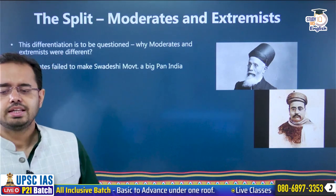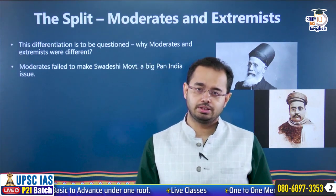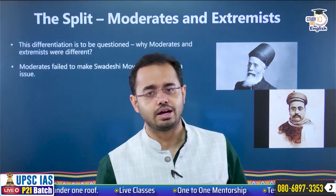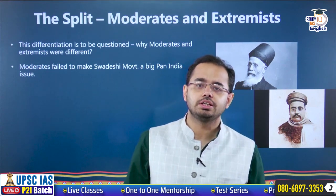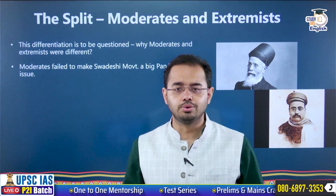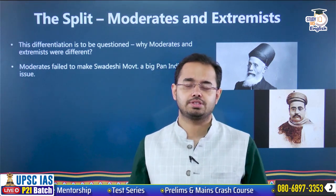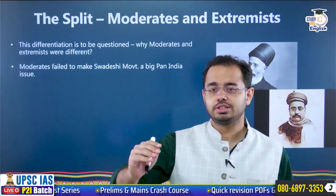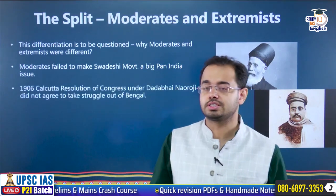The very first thing: moderates failed to make Swadeshi a pan-India movement. Moderates, led by Dada Bhai Naroji or Gopal Krishna Gokhale, wanted to make Swadeshi only an agenda of Bengal. We all know the preceding chapter of the Swadeshi movement — that the movement itself started because of the partition of Bengal. So they didn't want the Swadeshi agenda to go beyond the borders of Bengal. That was the first difference.